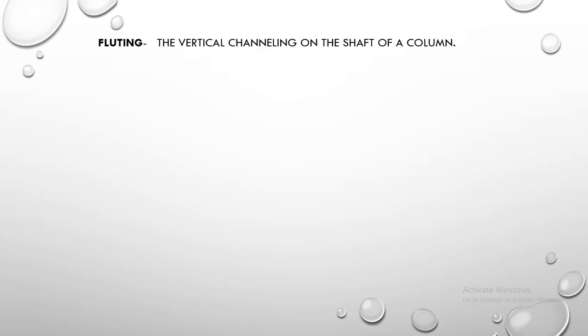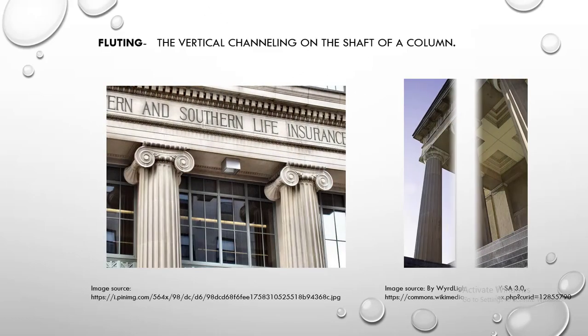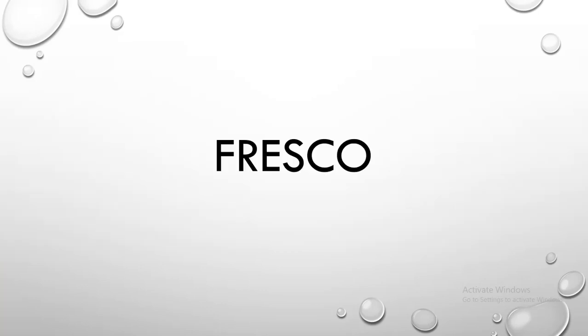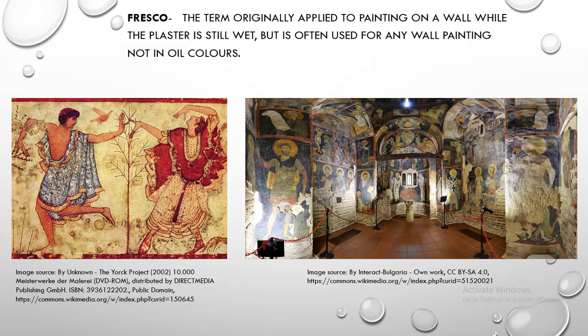Fluting. Fluting are the vertical channeling on the shaft of a column. Forum. Forum is the public open space for social, civic or market purposes, found in every Roman town. Fresco. Fresco is the term originally applied to painting on a wall while the plaster is still wet, but is often used for any wall painting not in oil colors.